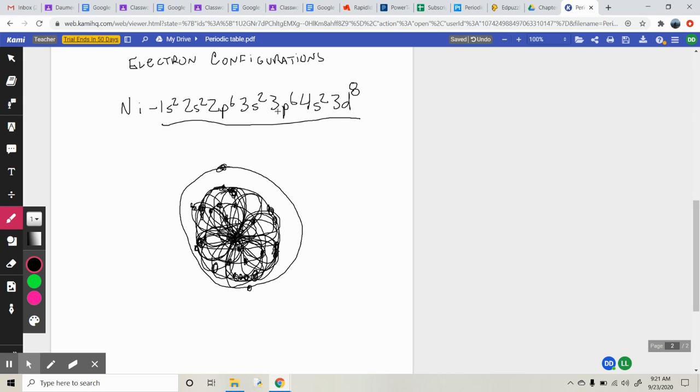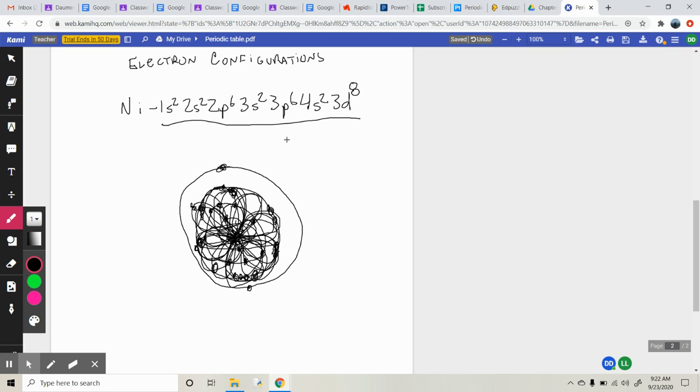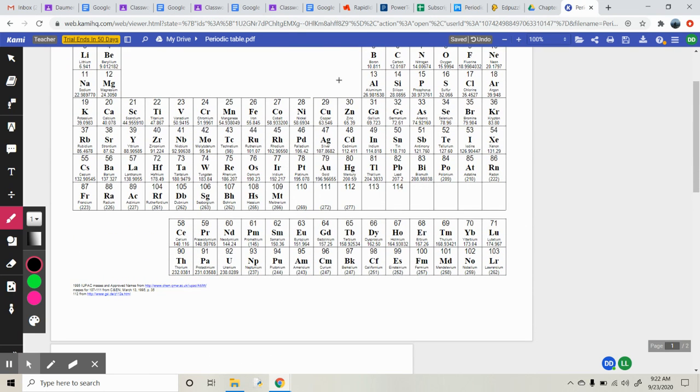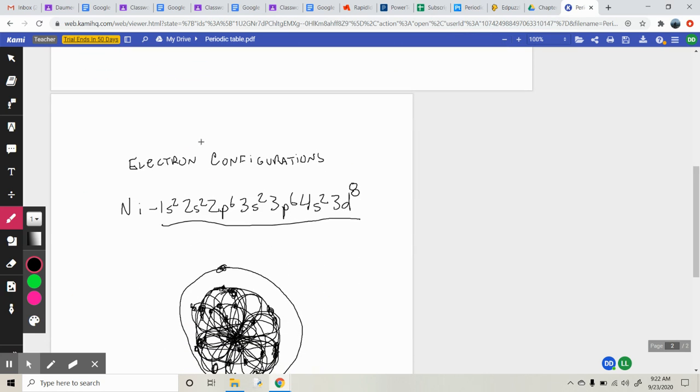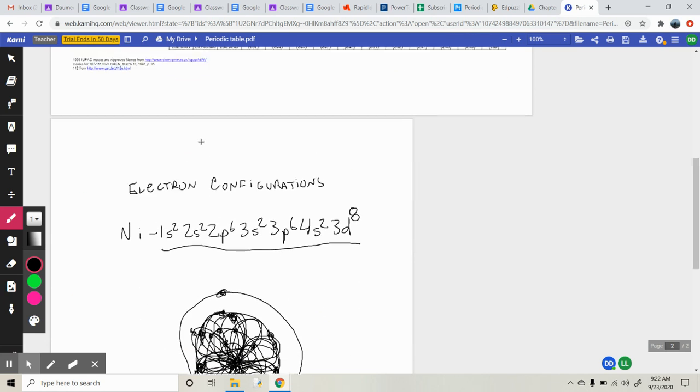It tells us how many valence electrons we have as well. Remember, valence electrons are the last electrons in the outer level. And for nickel, that just happens to be 2, right? 4 is our last energy level, so it has 2 valence electrons. So that's kind of nice when we get into these transition metals where we have no idea what the valence electrons are. These electron configurations really help us out with that.